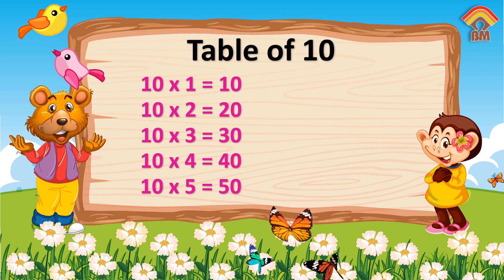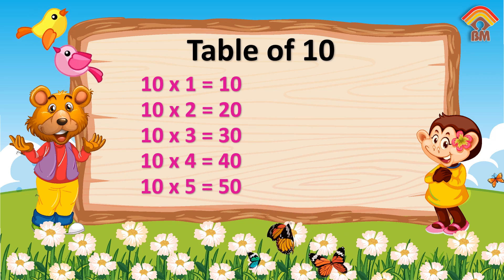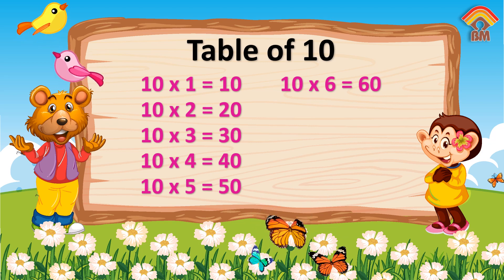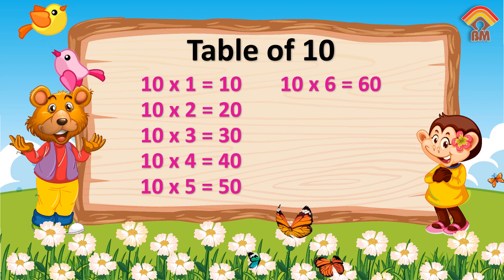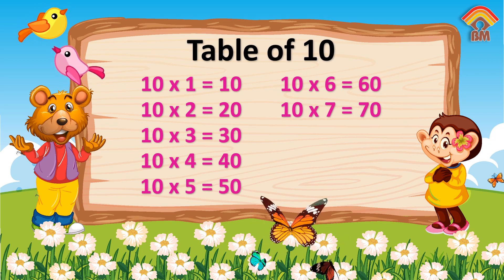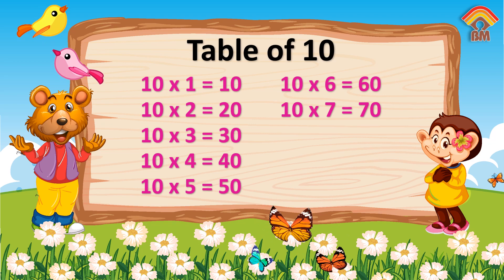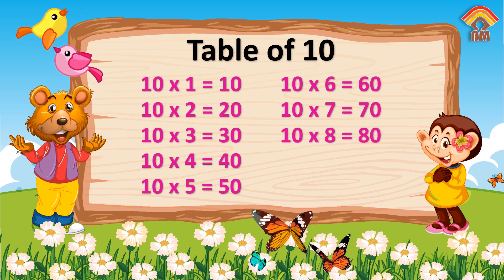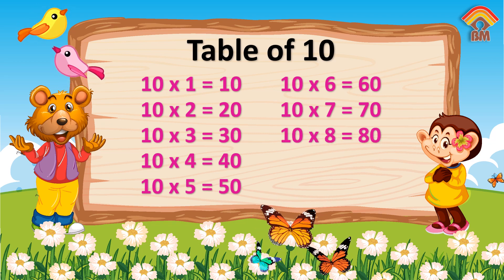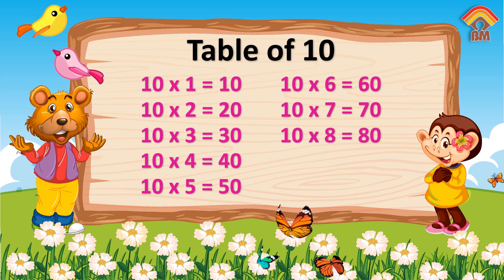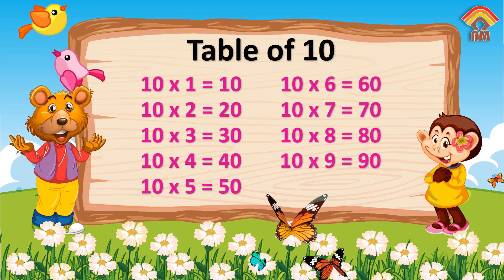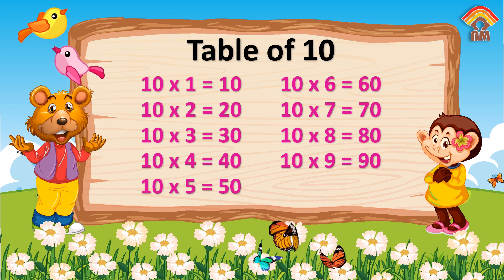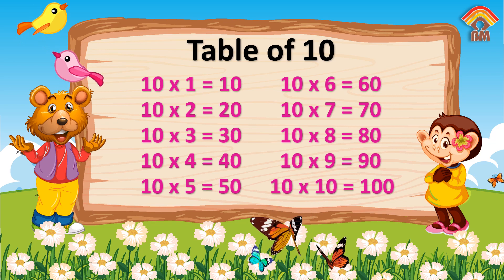Table of Ten. Ten sixes are sixty. Ten sevens are seventy. Ten eights are eighty. Ten nines are ninety. Ten tens are hundred.